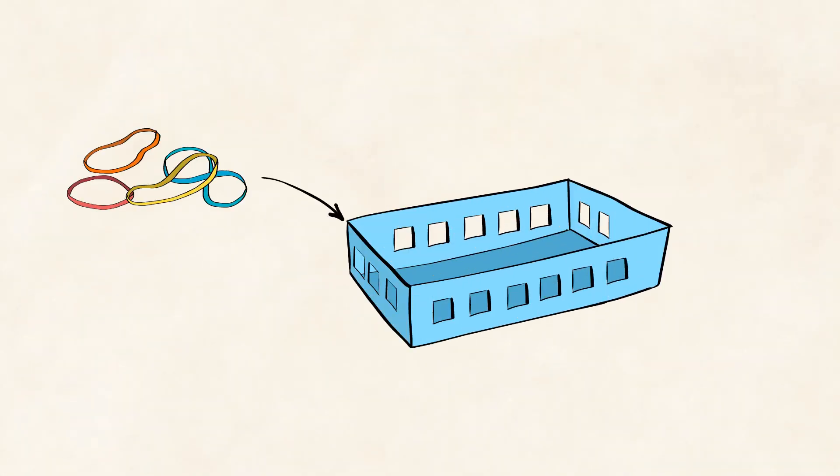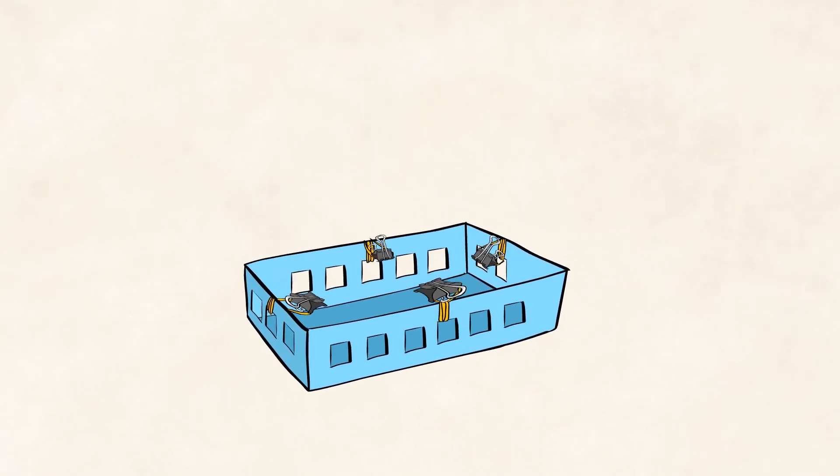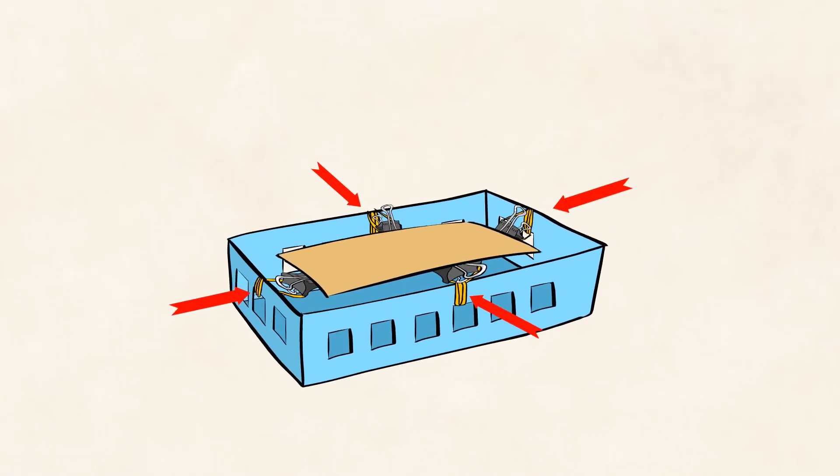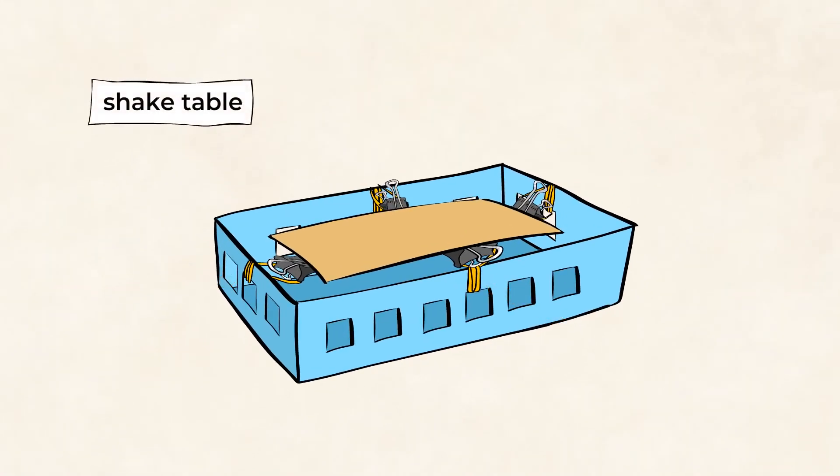Next, we'll feed the rubber bands through the holes in the plastic bin, then through the binder clips. Finally, let's clip the binder clips to the cardboard. We'll repeat this on each side of the cardboard square. Cool! We've created a shake table that will help simulate an earthquake.